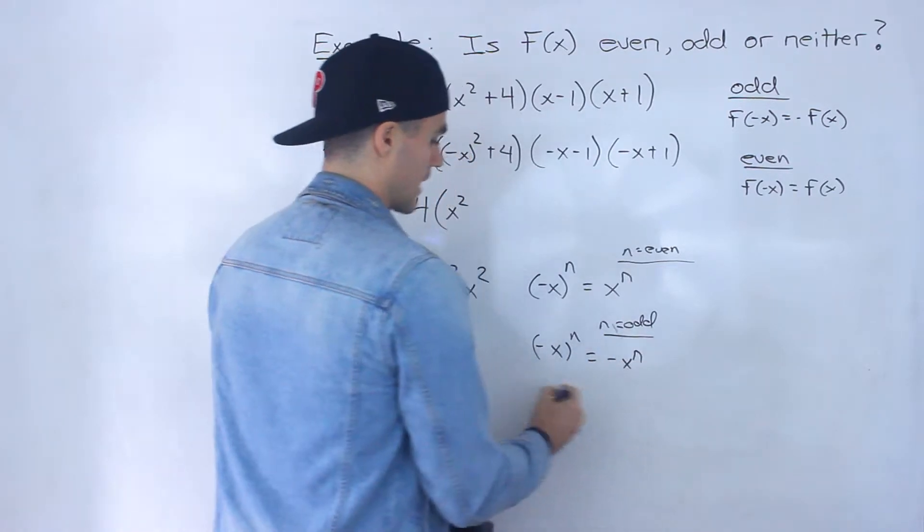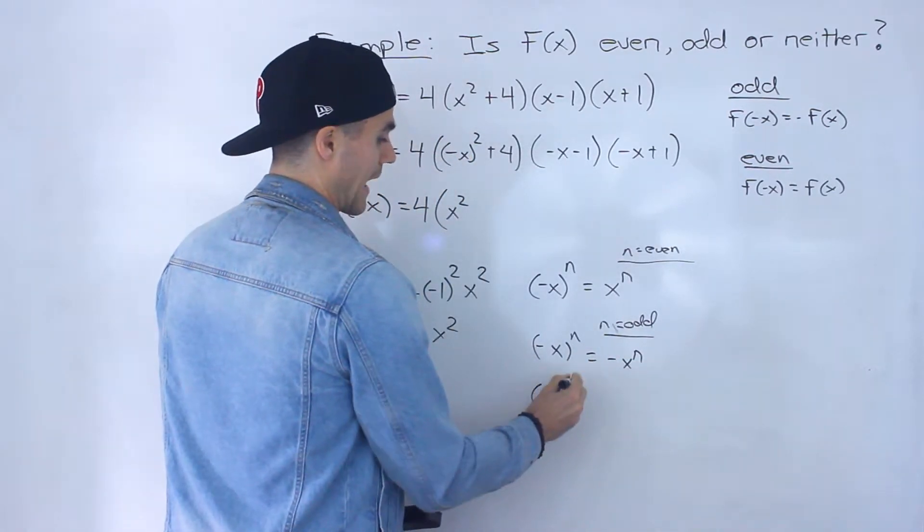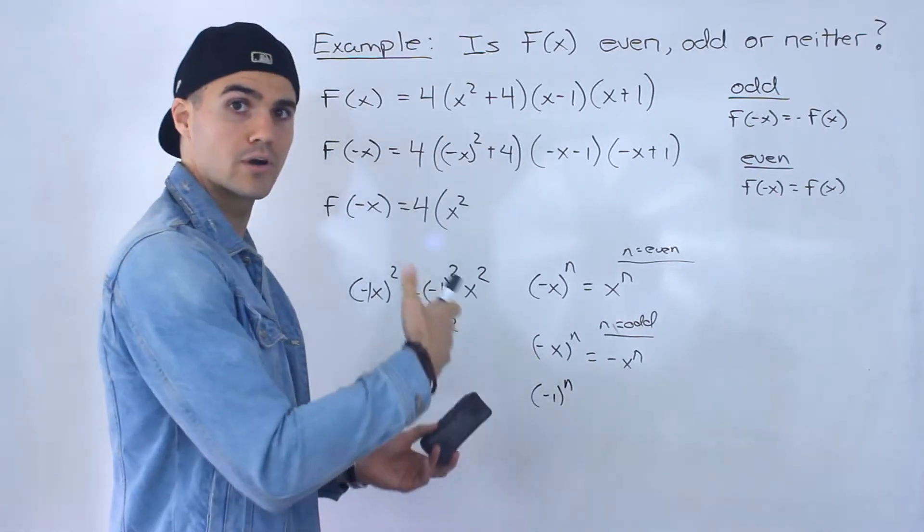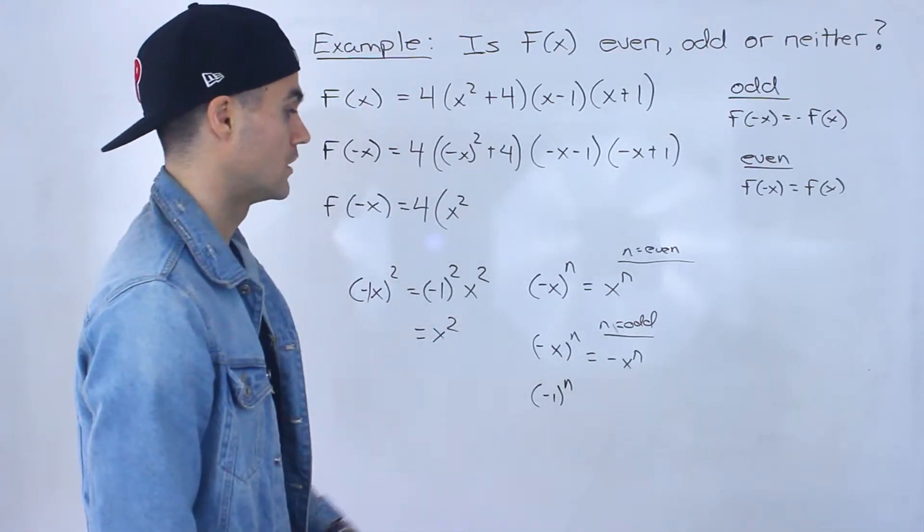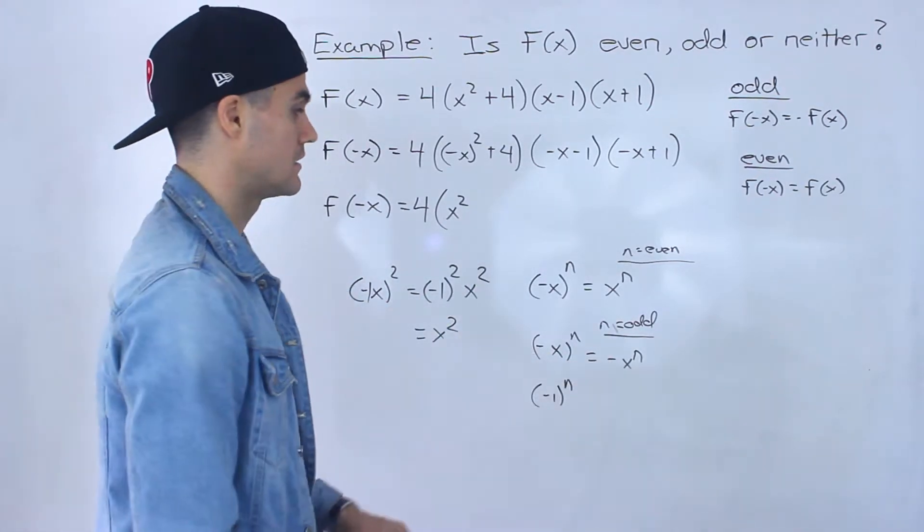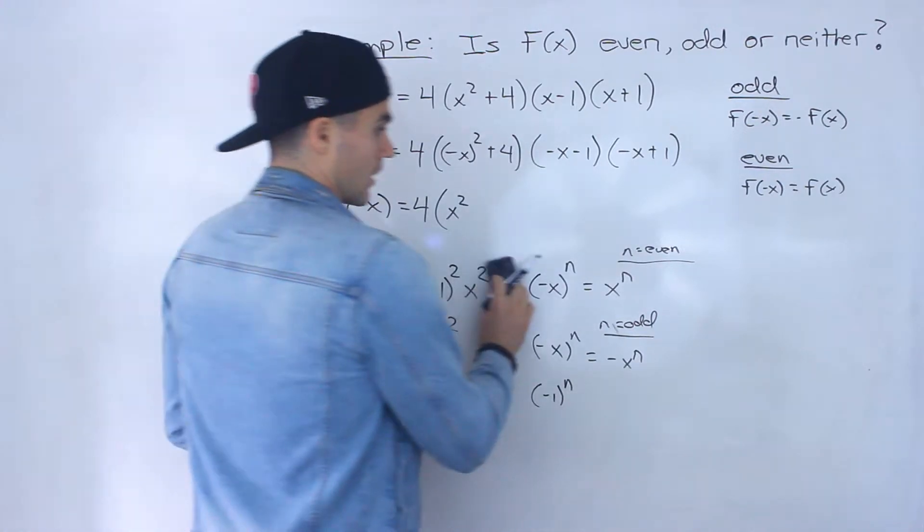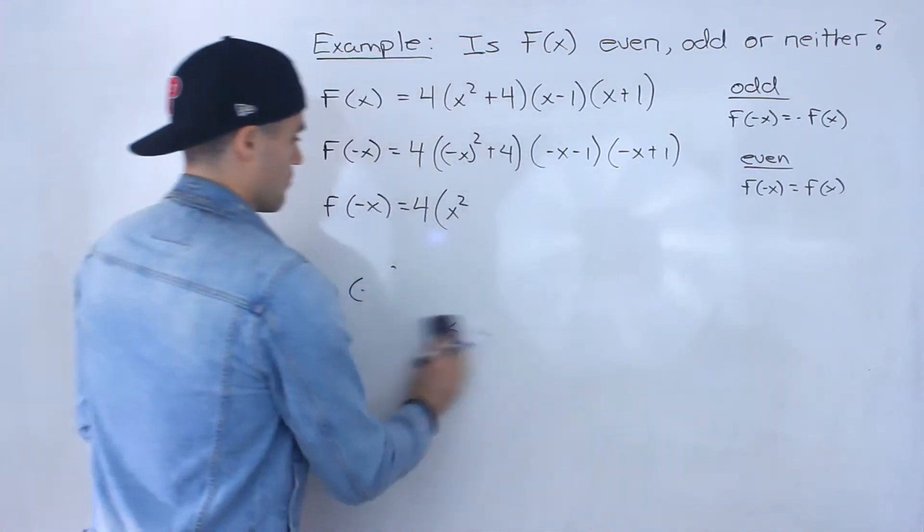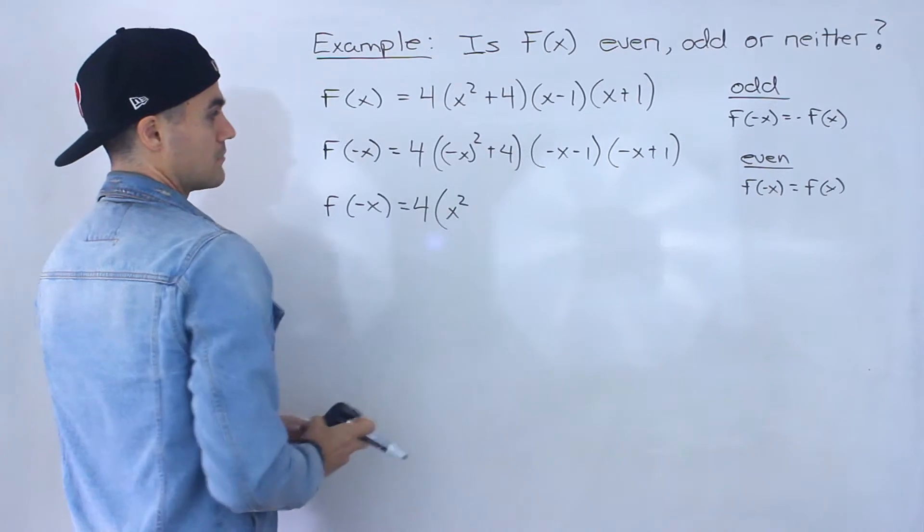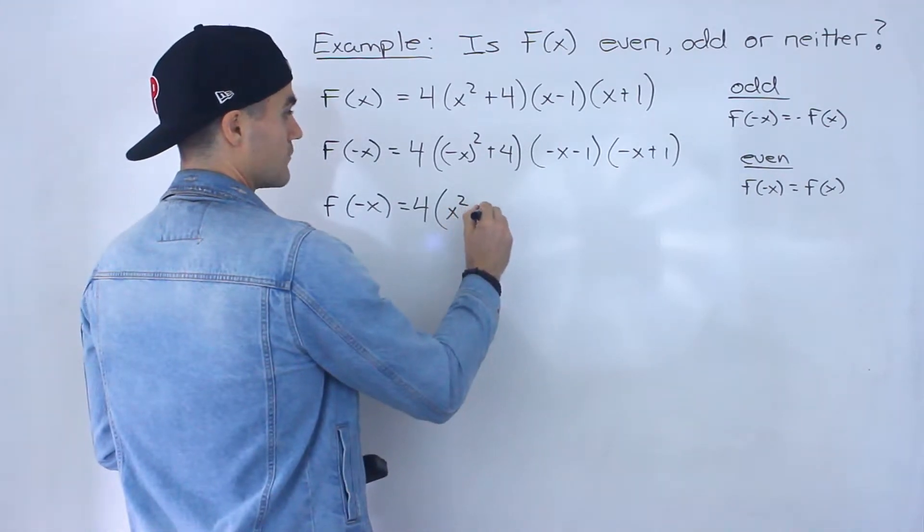And then if you have negative x to the power of n and n is an odd number, then you're going to just end up with negative x to the n, because that negative 1 is going to go to the power of n. And if n is an odd number, negative 1 to the power of an odd number is going to be negative 1. Right? So this here would end up being x squared and then we'd still have this plus 4.